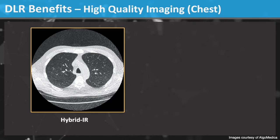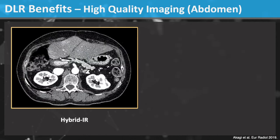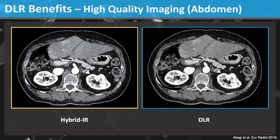This chest CT has high image noise despite using current reconstruction methods. DLR reduces image noise and improves image quality, which could improve diagnostic accuracy. This abdominal CT also has high image noise despite using iterative reconstruction. DLR reduces image noise and markedly improves image quality. These are actually thin-slice images, but they look amazing.